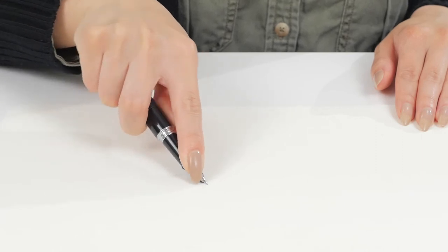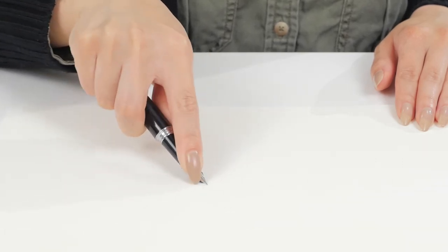Rock the nib from side to side for about 5 to 10 seconds. Check to see if the tines are still misaligned. Repeat step 2 if necessary.